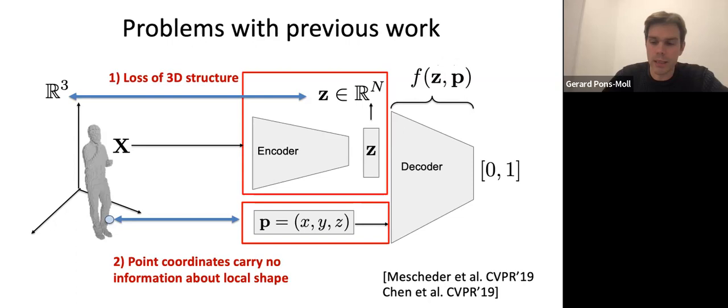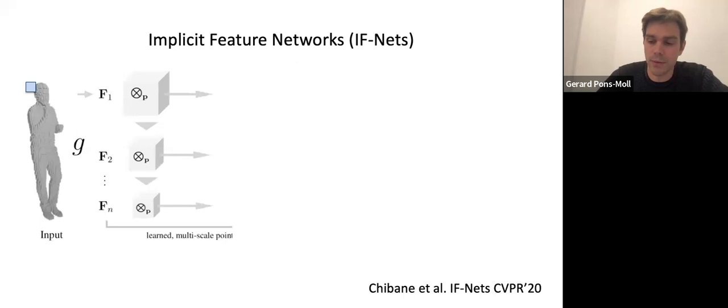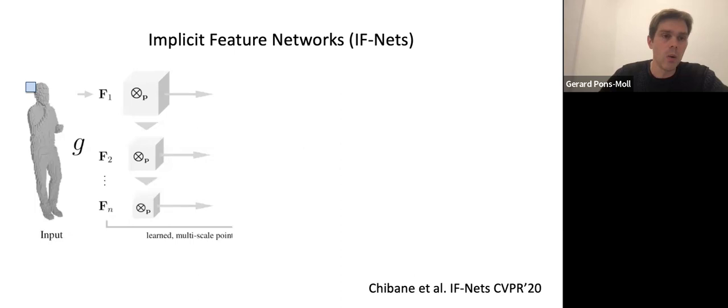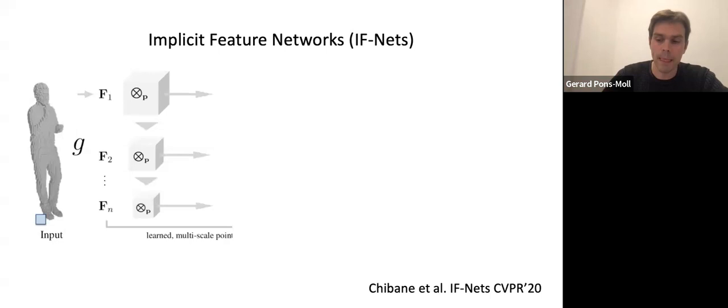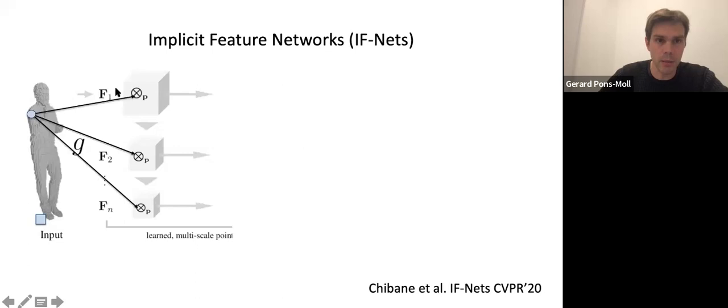We present a very simple idea that turns out to be very effective. If the input is some 3D representation that is noisy or incomplete, what we do is extract a multi-scale grid of deep features by 3D convolving the input. Then, instead of sending the point coordinates to the decoder, we extract a deep feature at the continuous location within this multi-scale grid of deep features and send those deep features into the decoder. So for a point here in the shoulder, we look up the corresponding point in the multi-scale grid, which is aligned with the input, and extract deep features from global to local — like a 2D convolutional neural network.